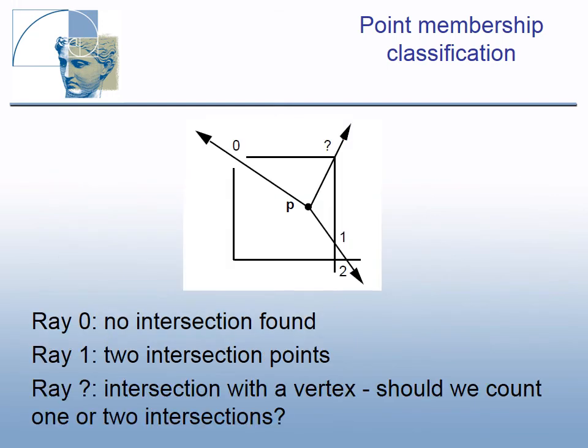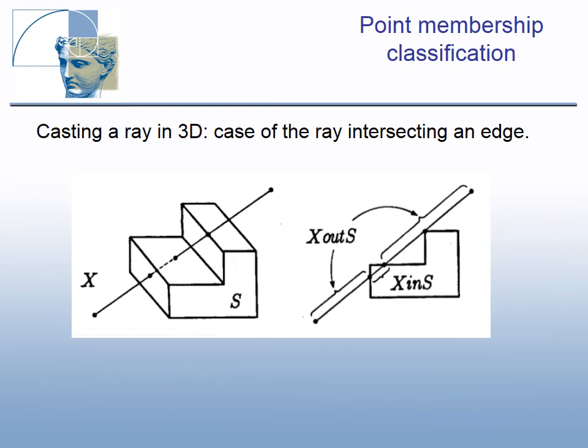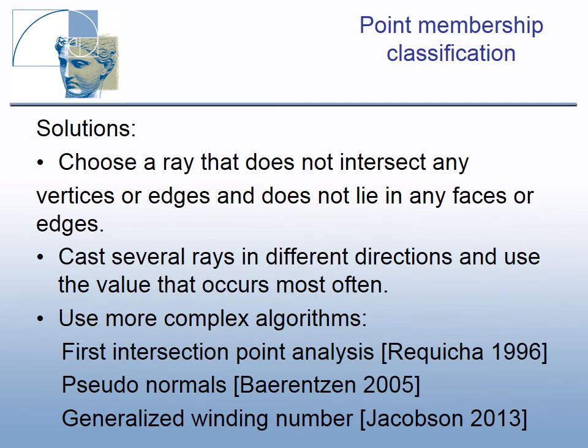Singular cases are illustrated on the slides, including a ray intersecting an edge. Solutions include: choosing a ray that does not intersect any vertices or edges and does not lie in any faces; casting several rays in different directions and using the value that occurs most often; or using more complex algorithms.